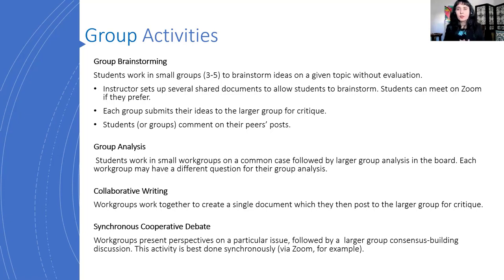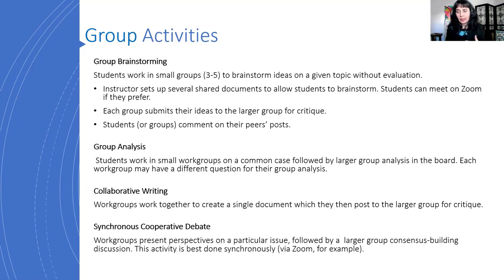The first is group brainstorming. Students work in small groups — I suggest no more than five people — to brainstorm ideas on a given topic without evaluation first. The instructor sets up several shared documents, like Google Docs, to allow students to brainstorm asynchronously. Or you could set up Zoom links so each group could meet synchronously. Basically, you give each group a choice of how they would brainstorm — synchronously or asynchronously — and provide links to shared documents or a video conferencing platform. Then each group submits their ideas on a discussion board for the whole class to evaluate and critique.